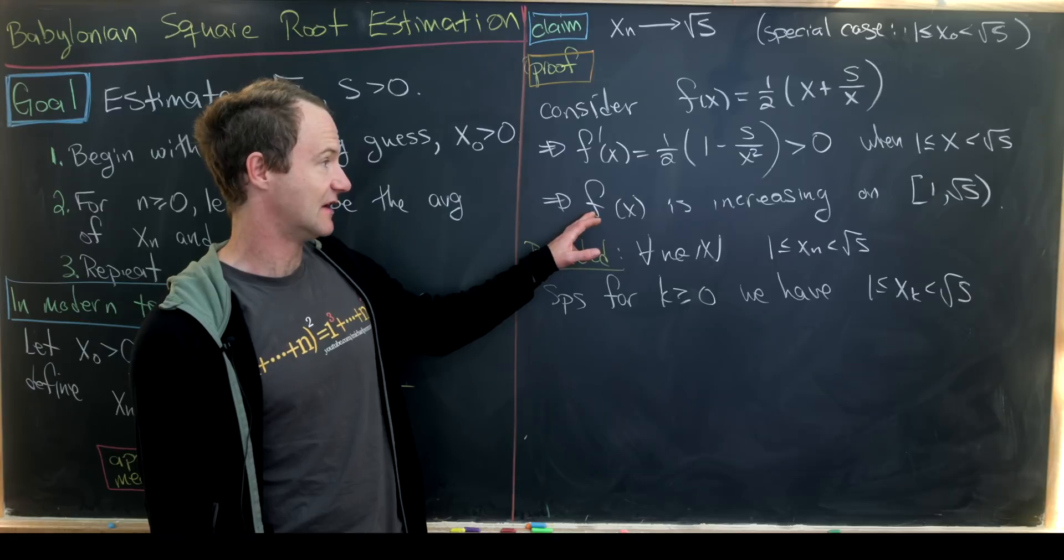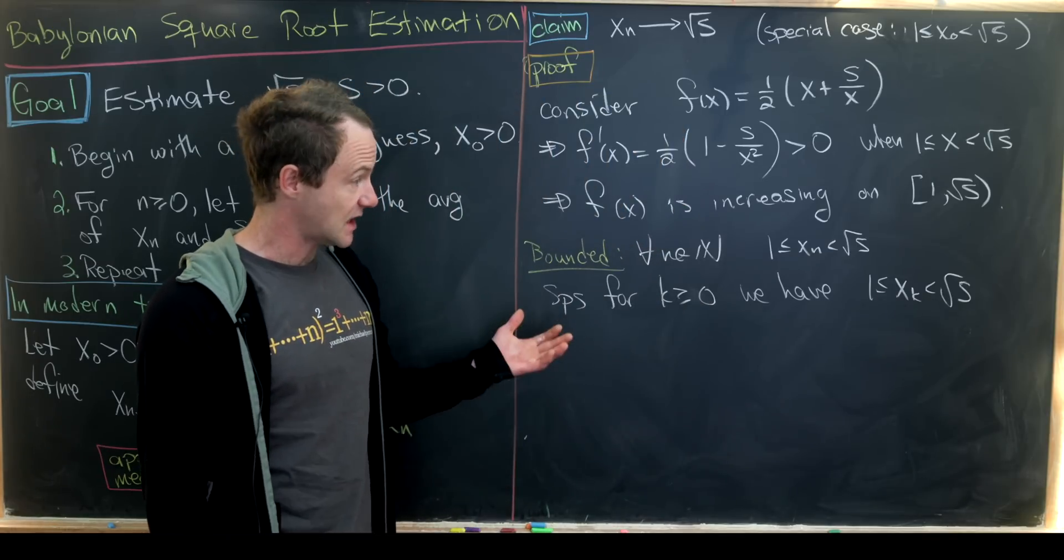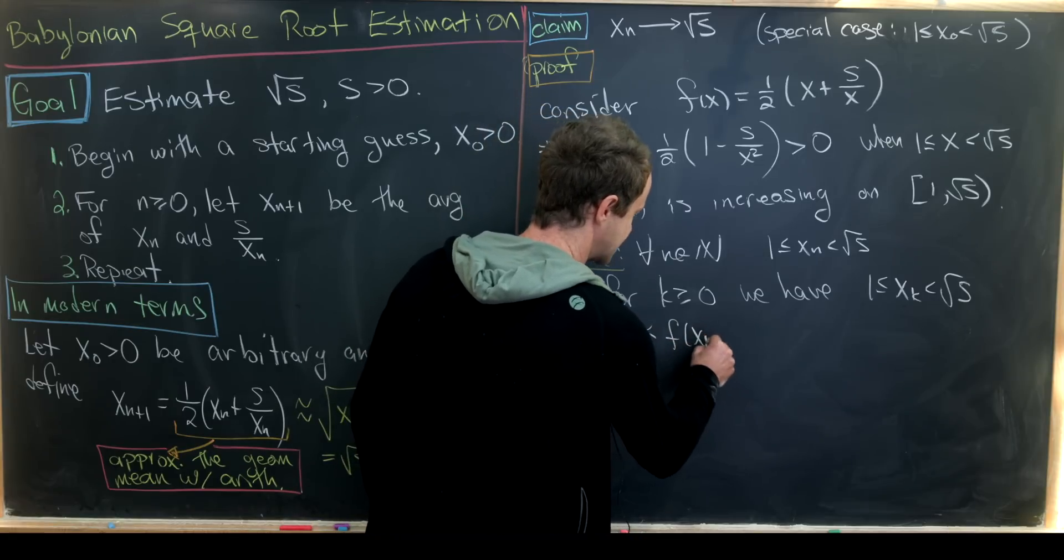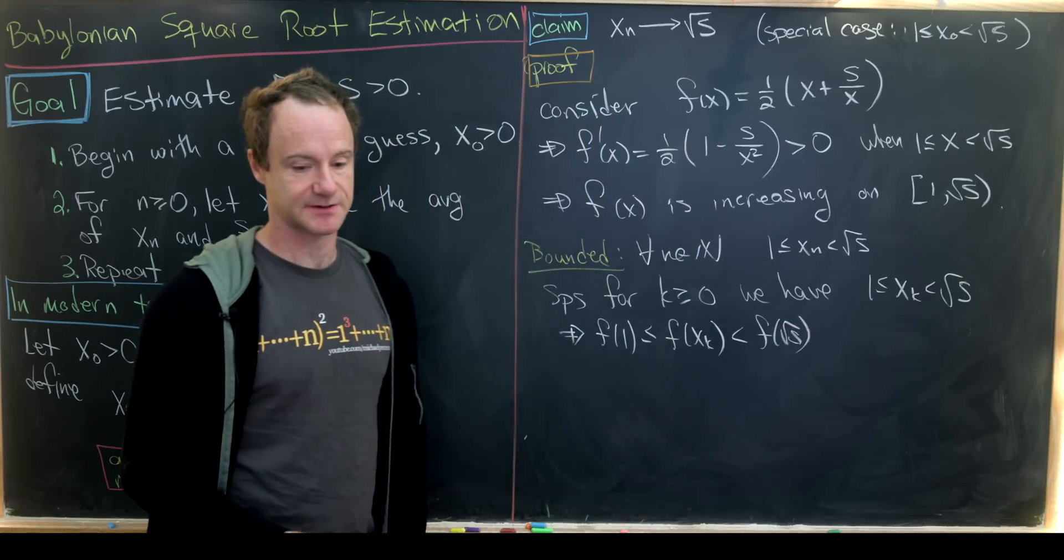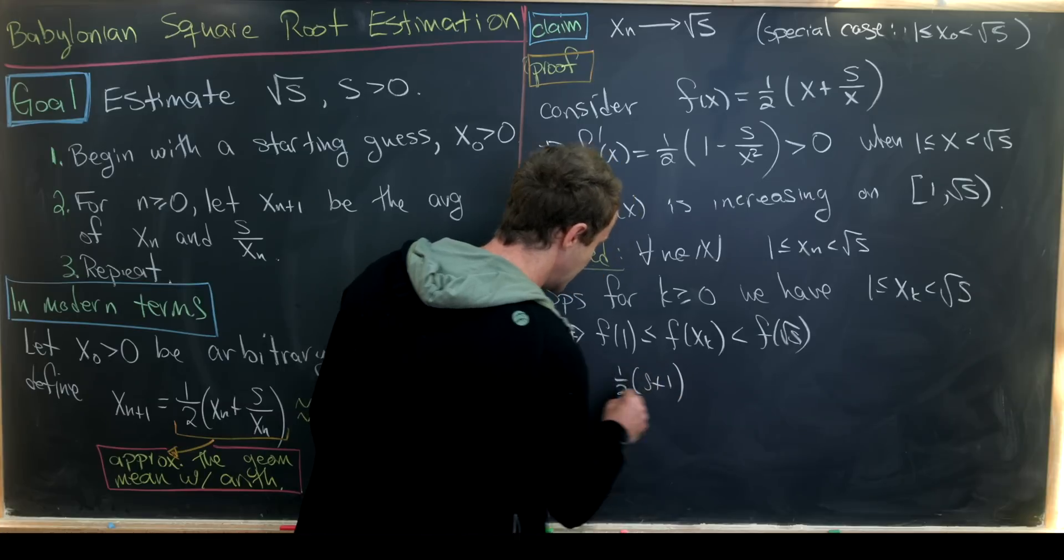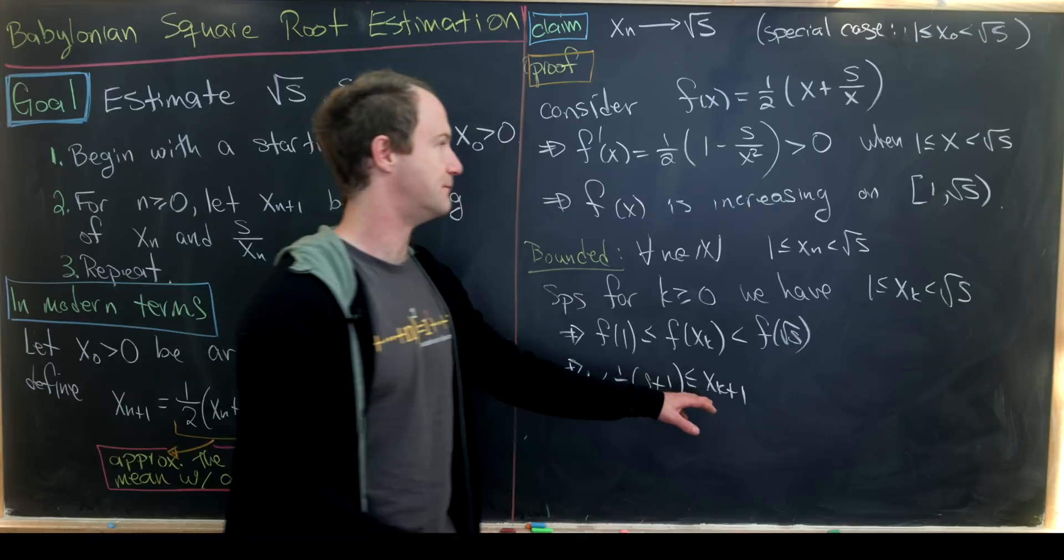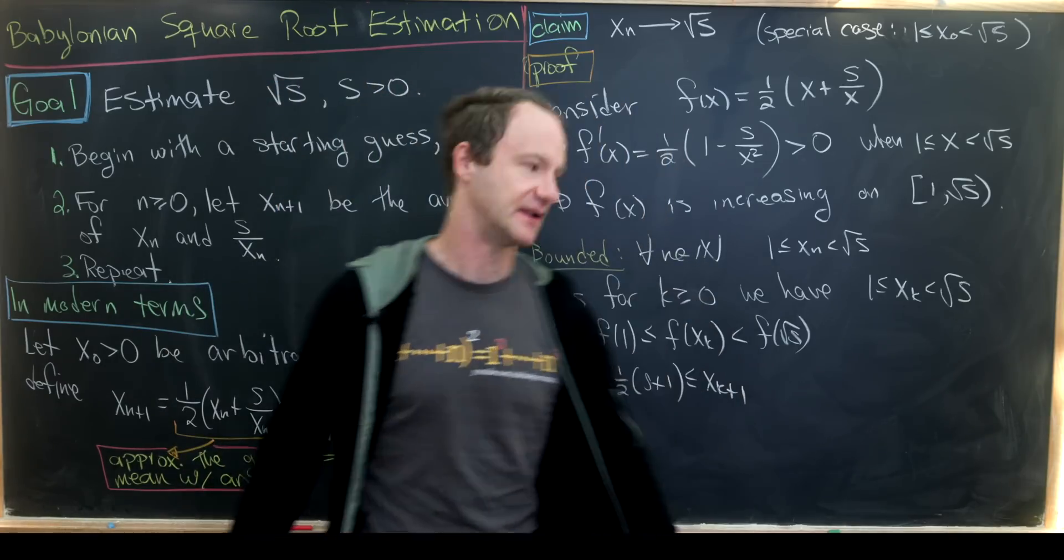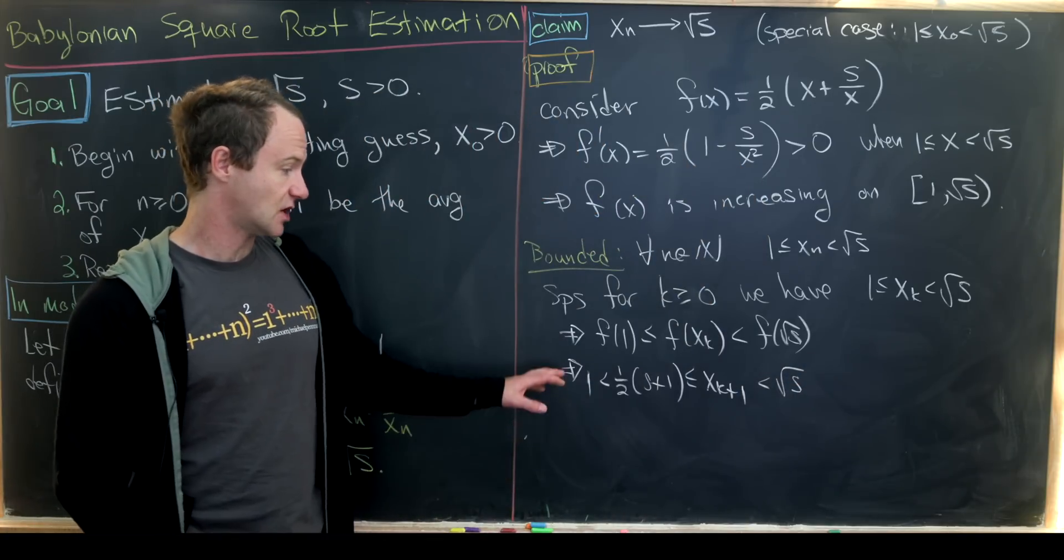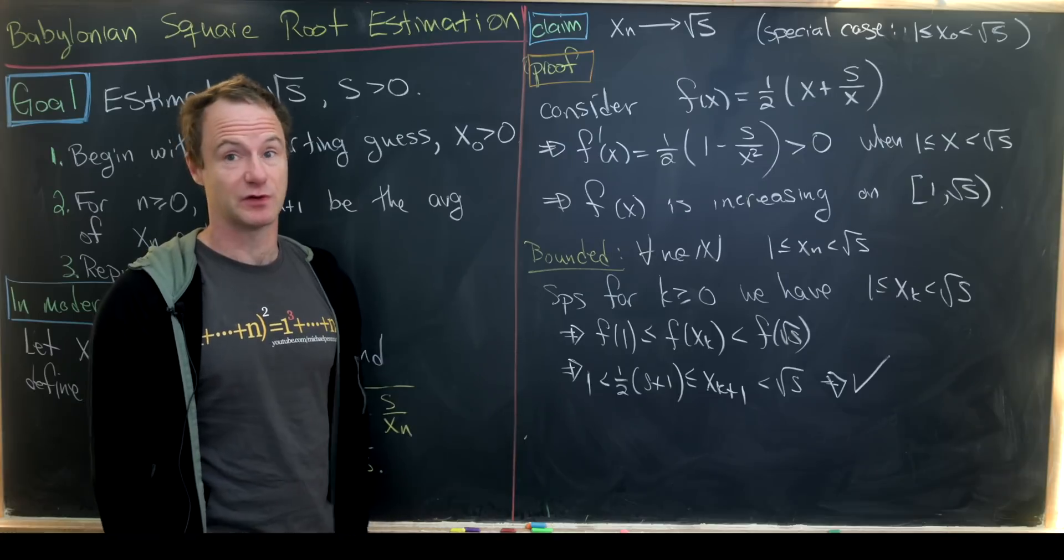But now, since our function f is increasing on that interval, if we apply the function to each part of this inequality, then the inequality is still satisfied. So we've got f(1) ≤ f(xₖ) < f(√s). But now let's notice that f(1) = ½(s + 1), which itself is clearly bigger than 1. And then f(xₖ) is clearly equal to xₖ₊₁ based off of our definition of f, as well as the way we're defining this sequence. And then the square root of s is in fact a fixed point for this function. So we can just bring down the square root of s here. So that means that we have a bounded function here. We've shown that this thing is bounded by the principle of mathematical induction.